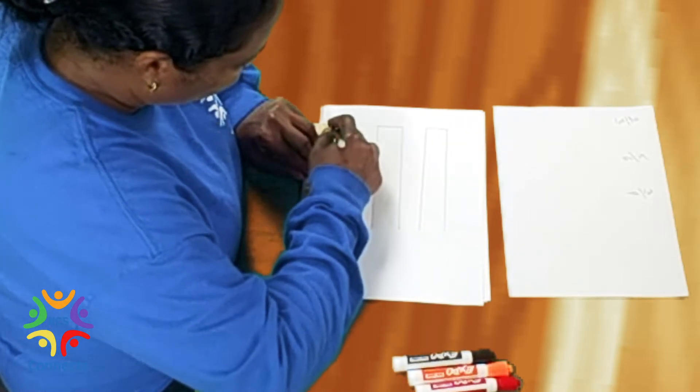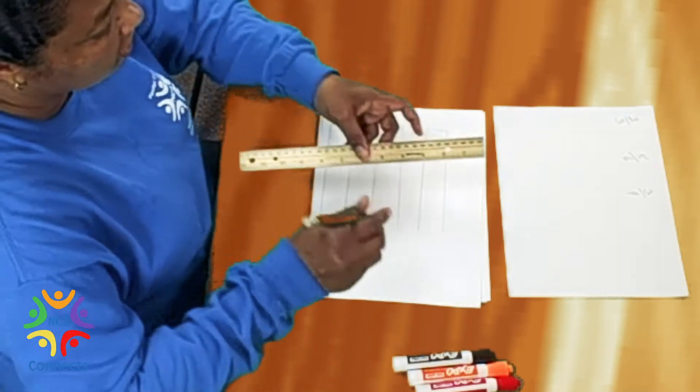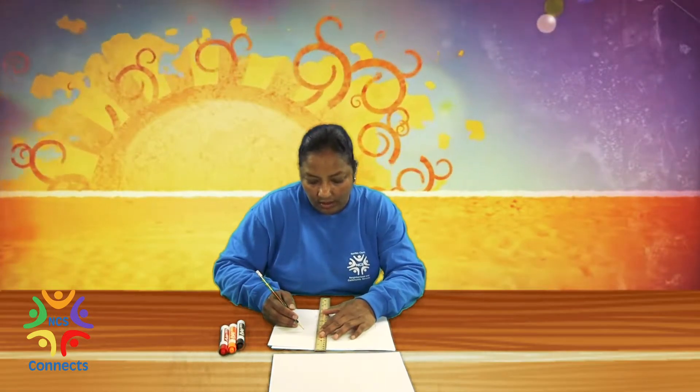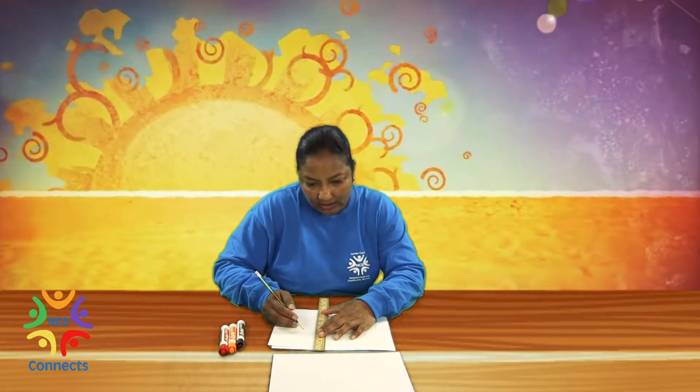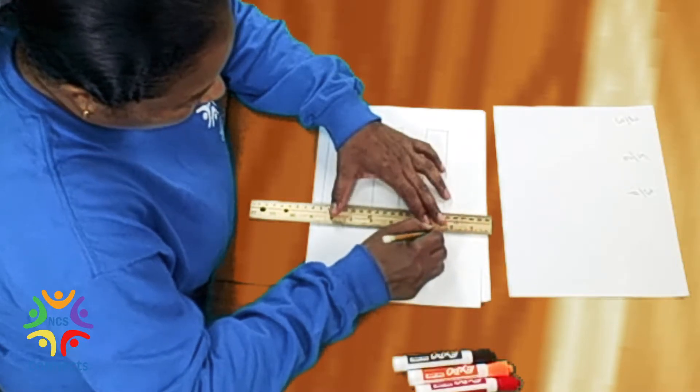Because what we are trying to do here is to compare three fractions, which is two-thirds, five-sixths, and three-fourths to see which one is greater than the other.